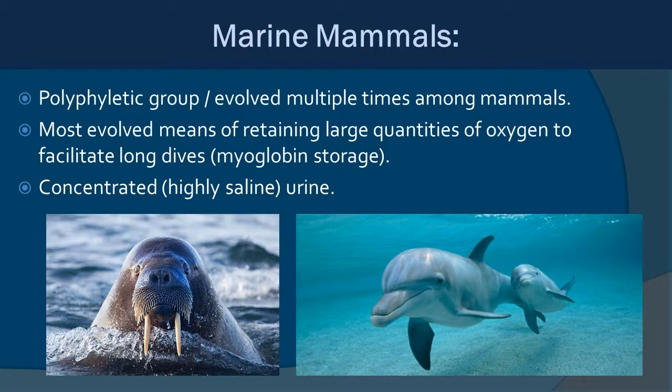Marine mammals are polyphyletic groups — several different groups that evolved multiple times among different mammal lineages. In the process of becoming marine mammals, they evolved means to retain large quantities of oxygen to facilitate long dives, largely through myoglobin storage. They also tend to produce very highly concentrated, highly saline urine, which makes sense in a saltwater environment. Marine mammals don't generally drink seawater; they get most of their water from the food they eat.